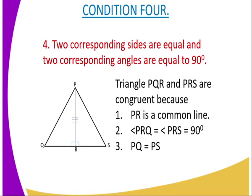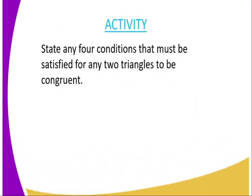And also, we have a line PQ, PQ is also equal to PS. And therefore, this is the fourth condition, and we can see that triangle PRQ and PRS are two congruent triangles.